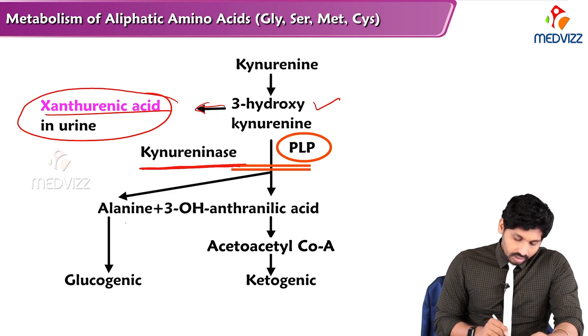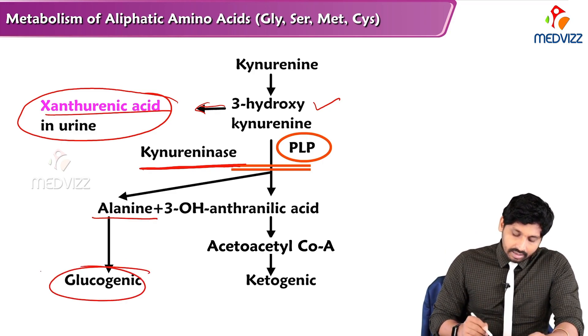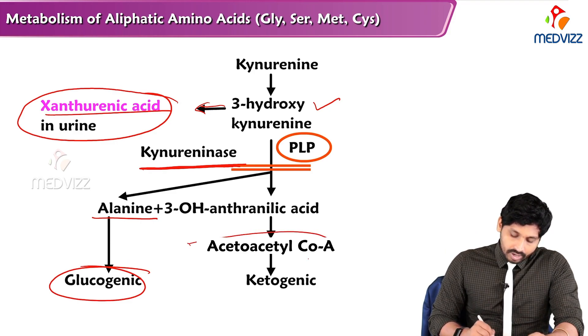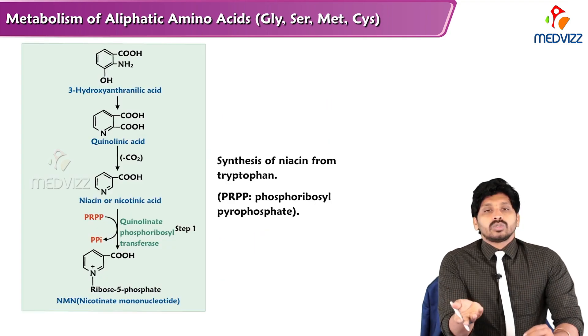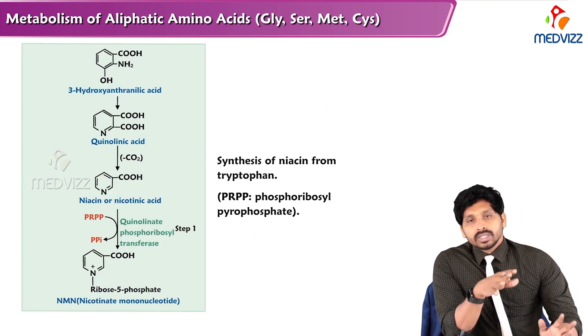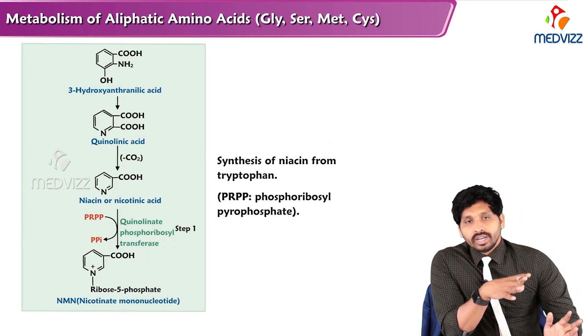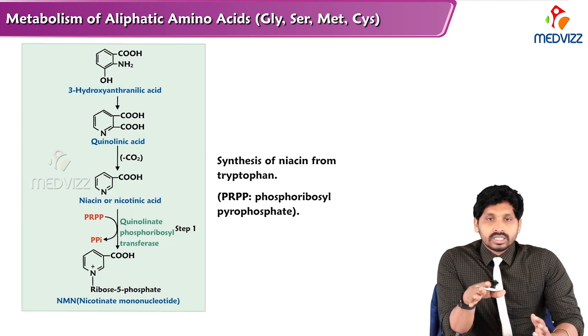So deficiency of vitamin B6 or the enzyme kynureninase leads to accumulation of 3-hydroxykynurenine, which converts to xanthurenic acid and is excreted in urine. To summarize: alanine is glucogenic, and further degradation of kynurenine to anthranilic acid and then to succinyl-CoA is ketogenic. That covers the kynurenine pathway.